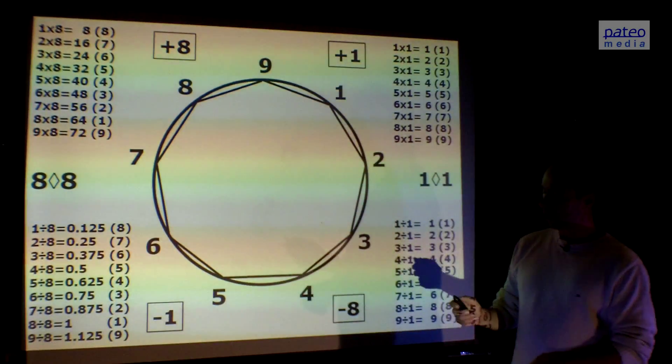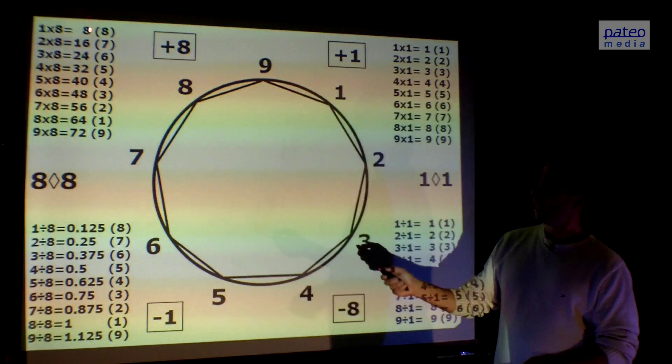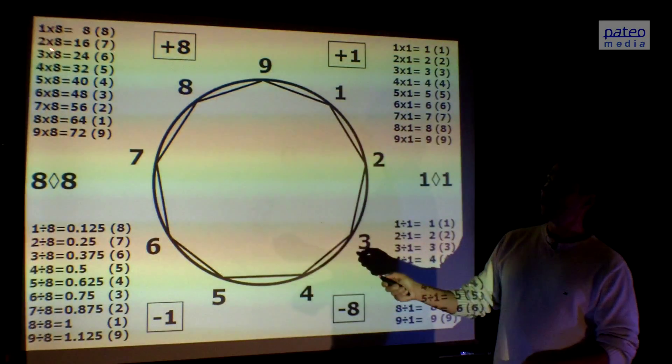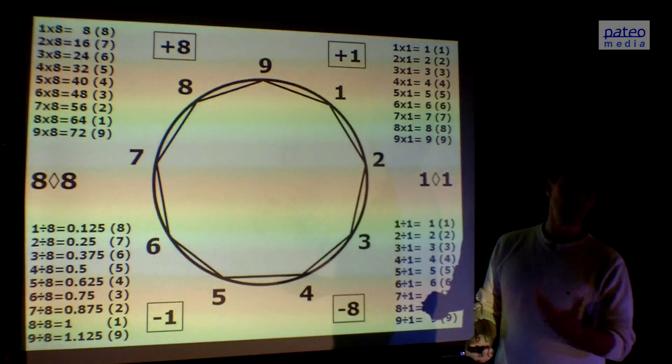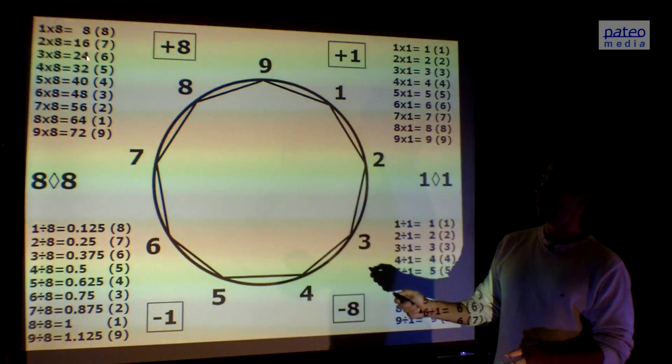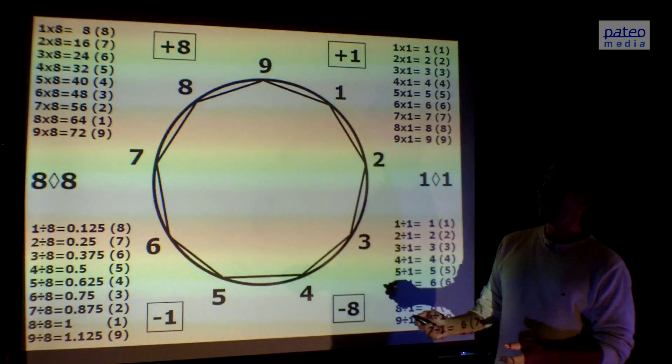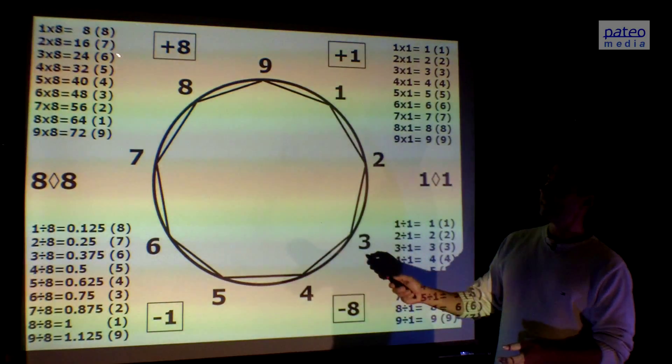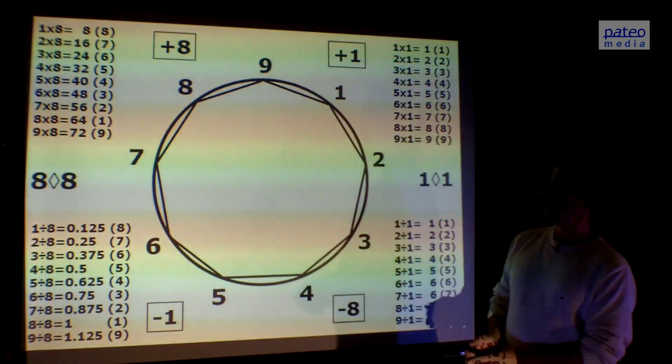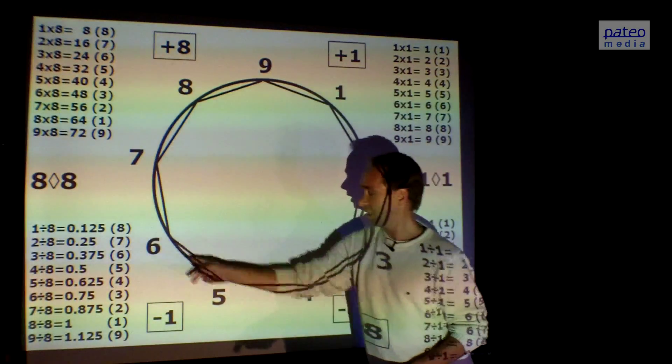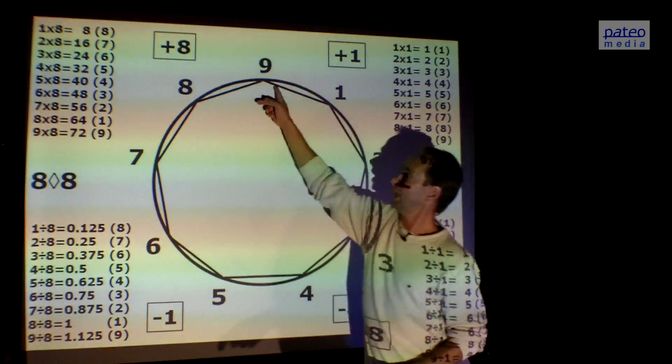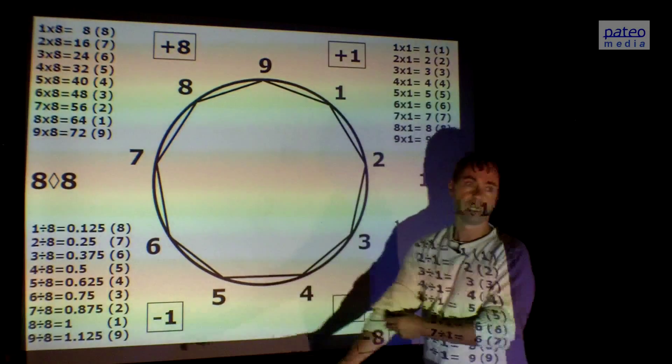If we look at eight, it's the opposite. One times eight is eight. Two times eight is 16, but we add up the one and the six, then we get seven. Three times eight is 24, we add up the two and the four, we get six, and so on. This is eight, seven, six, five, four, three, two, one, nine. It's going counterclockwise.